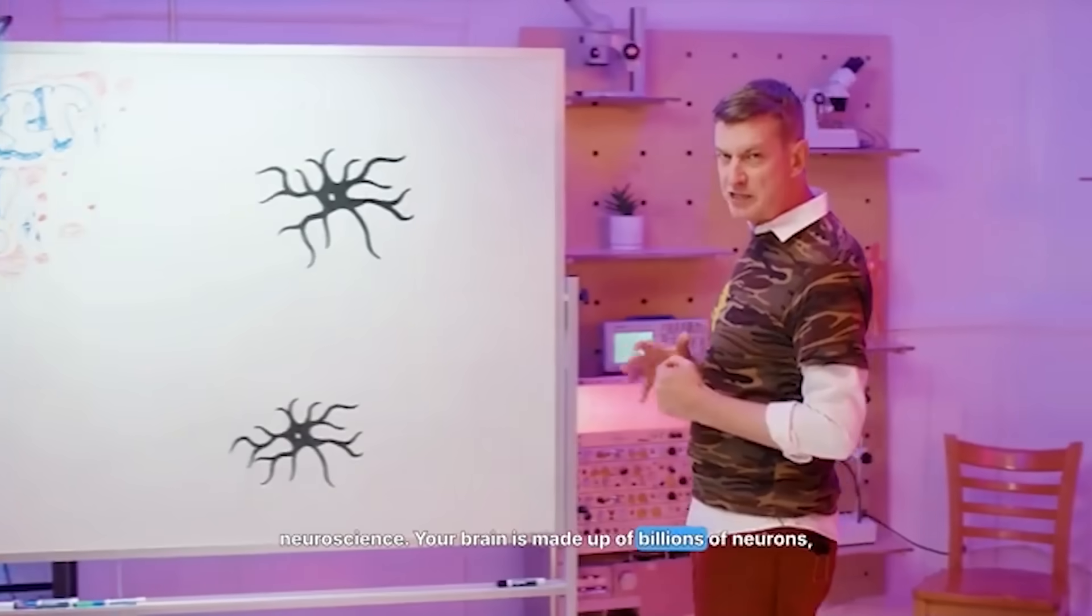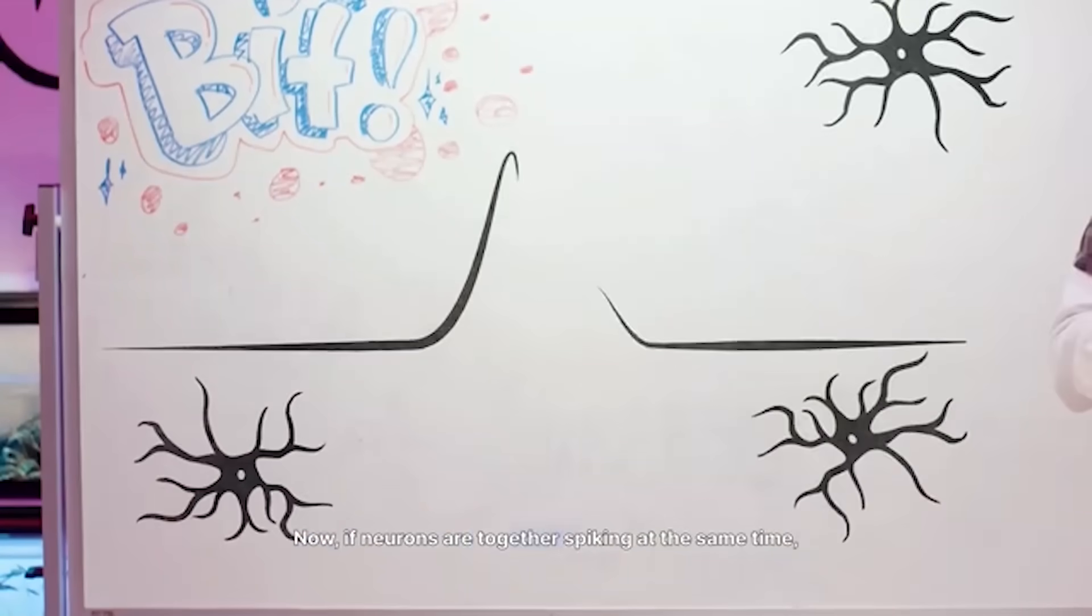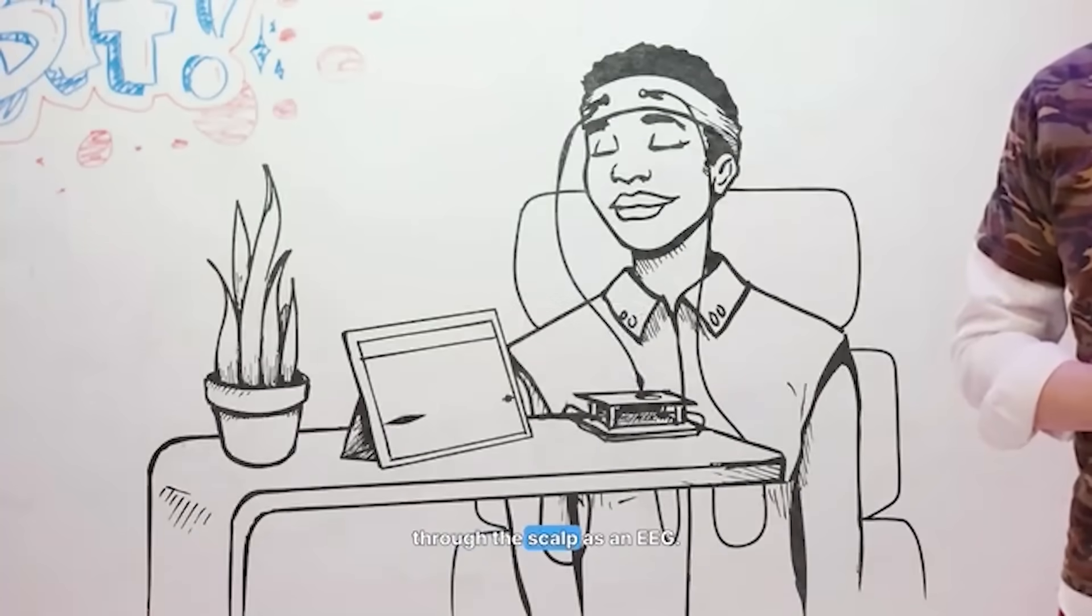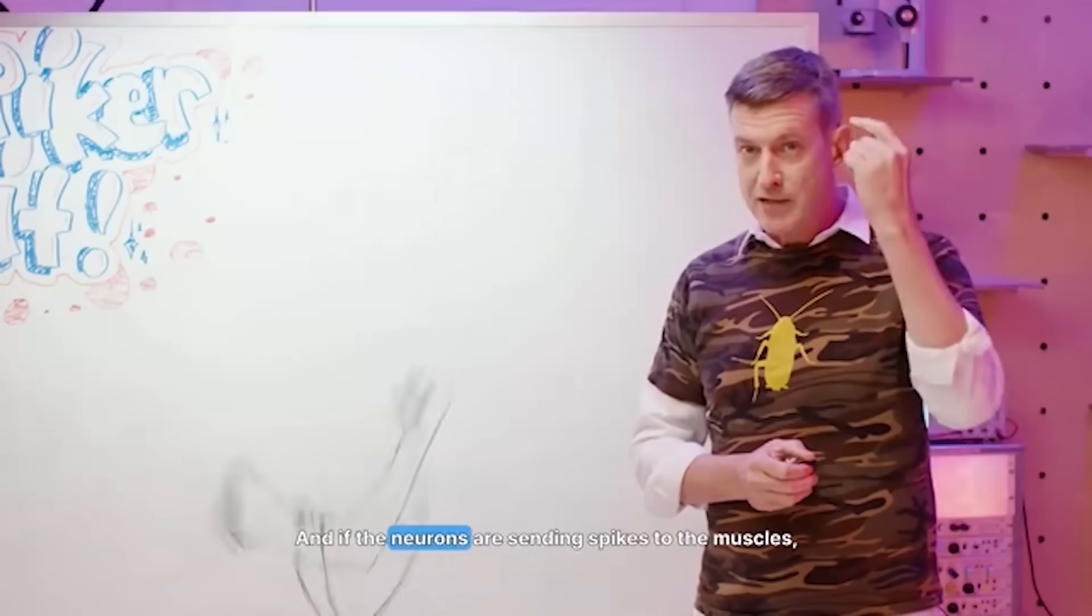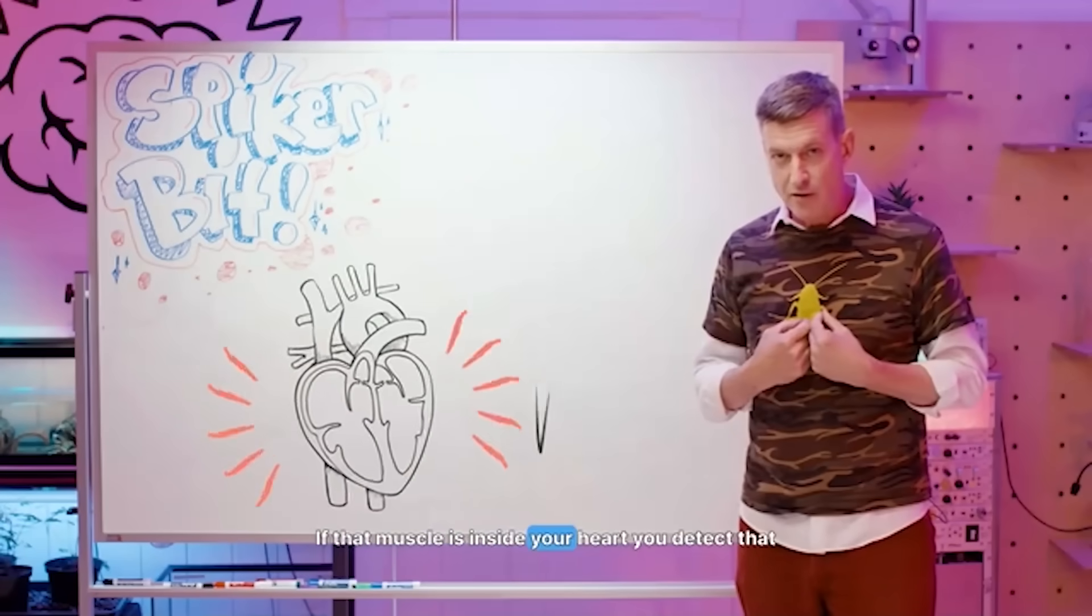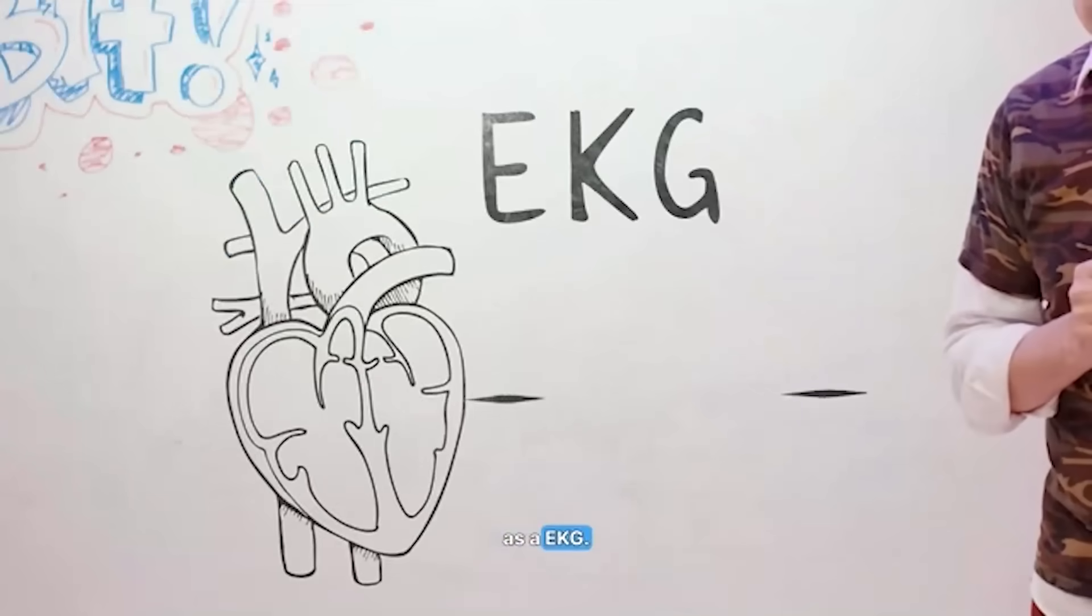Your brain is made up of billions of neurons. Now, if neurons are together spiking at the same time at the same spot of the brain, we can detect that through the scalp as an EEG. And if the neurons are sending spikes to the muscle, you can detect that as an EMG. If that muscle's inside your heart, you can detect that as an EKG.